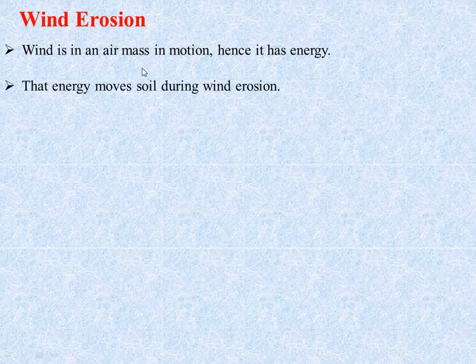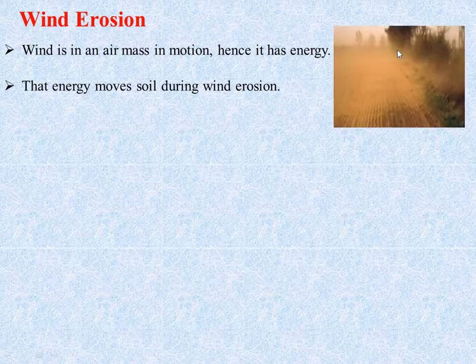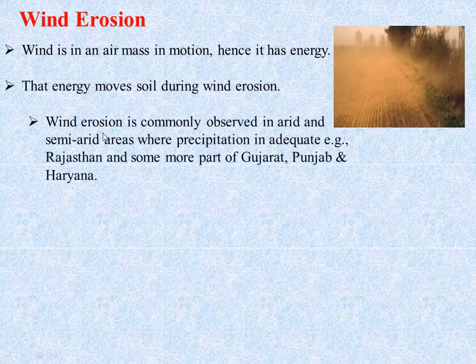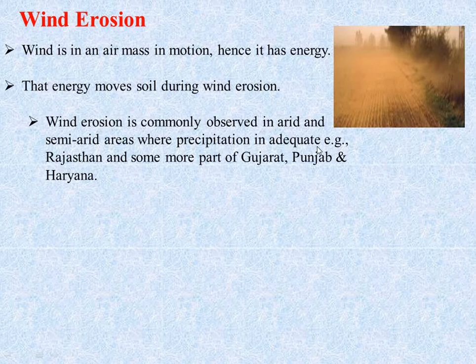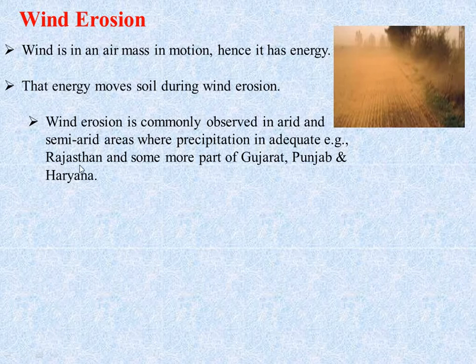Wind erosion is commonly observed in arid and semi-arid regions where precipitation is inadequate, making soil very dry. In the Indian subcontinent, we can see the Thar Desert in Rajasthan and some parts of Gujarat, Haryana, and Punjab.